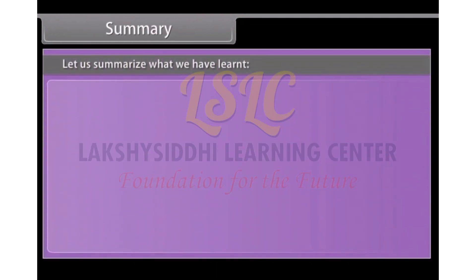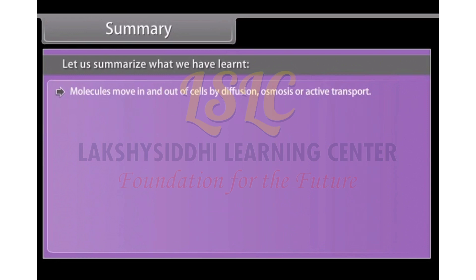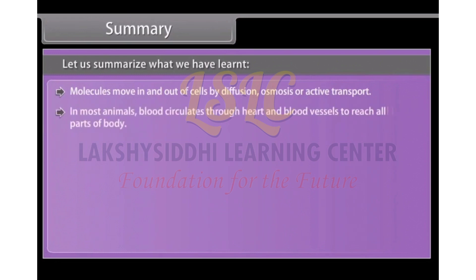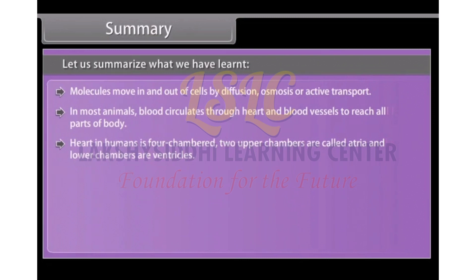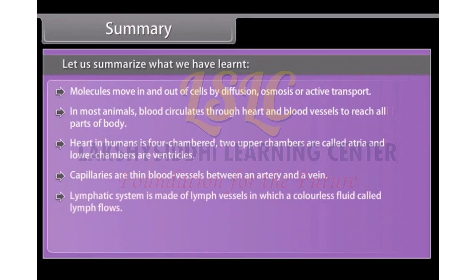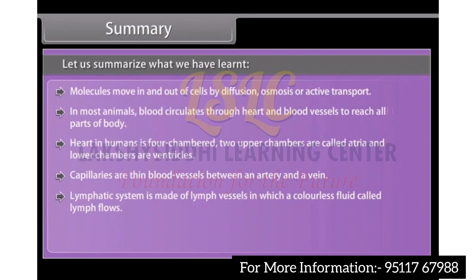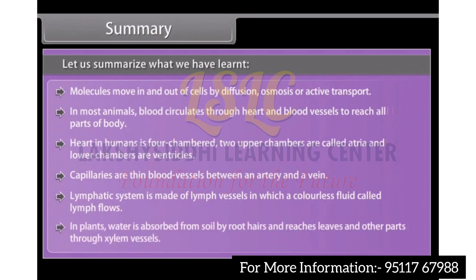Let us summarize what we have learned: Molecules move in and out of cells by diffusion, osmosis or active transport. In most animals, blood circulates through heart and blood vessels to reach all parts of body. Heart in humans is four-chambered; two upper chambers are called atria and lower chambers are ventricles. Capillaries are thin blood vessels between an artery and a vein. The lymphatic system is made of lymph vessels in which a colorless fluid called lymph flows. In plants, water is absorbed from soil by root hairs and reaches leaves and other parts through xylem vessels.